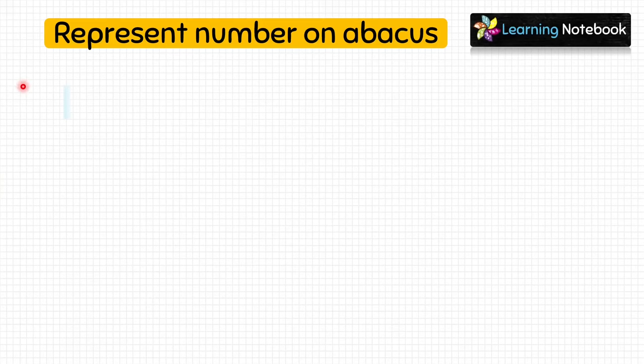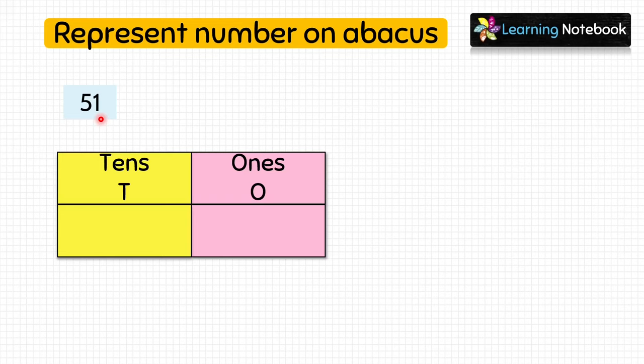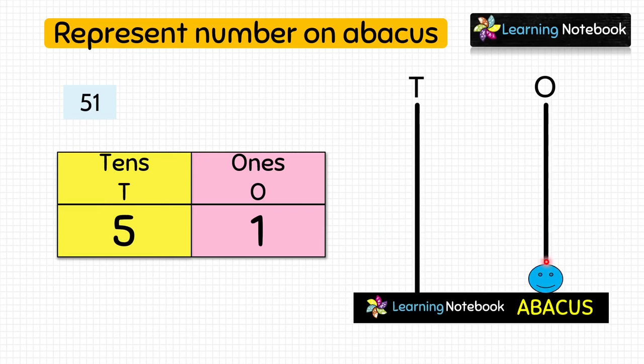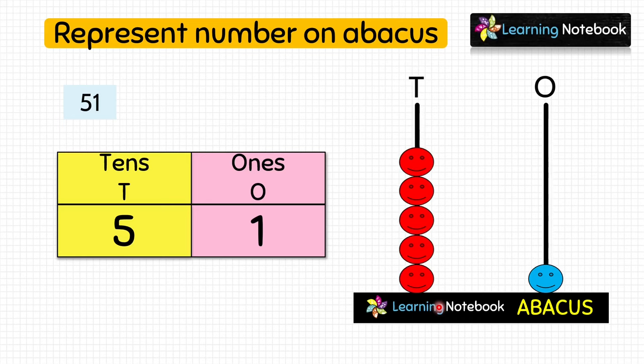The next number is 51. The digit at the ones place is 1 and the digit at the tens place is 5. So let's put 1 bead at the ones place on the abacus. Now we will put 5 beads at the tens place: 1, 2, 3, 4, 5. In this way we have represented the number 51 on the abacus.